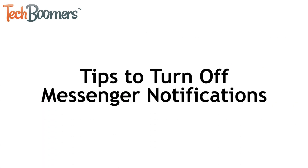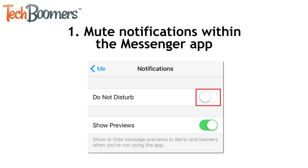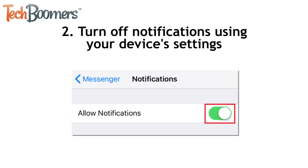If you're tired of getting notifications from Messenger but want to keep the app on your device to use it when you need it, we have a few tips to help you out. Number 1: Mute notifications within the Messenger app. This will allow you to temporarily stop notifications from all your conversations in Messenger. Number 2: Through your device's settings, turn off notifications for the Messenger app. The steps to do this will be different for each device, but you should be able to disable Messenger notifications through the notification options your device offers.